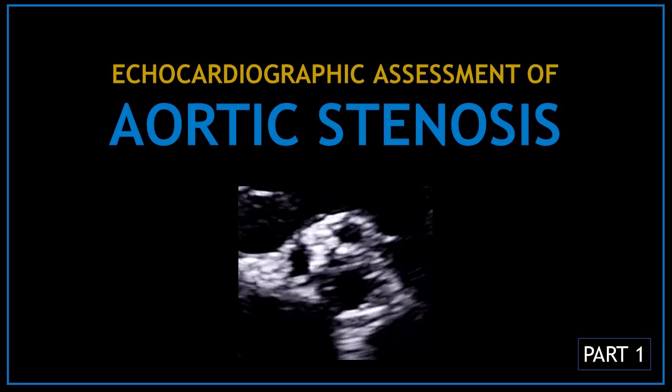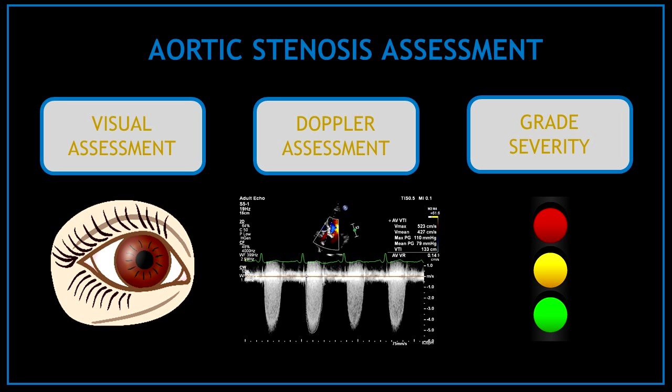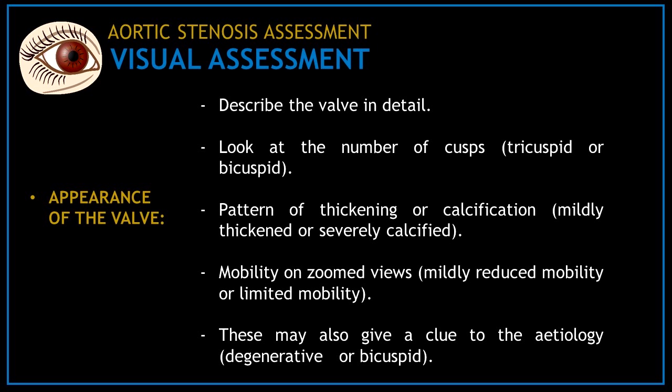Let's start with part one of the echocardiographic assessment of aortic stenosis. You can assess aortic stenosis in different ways; however, I recommend you assess it by following these three steps or categories. The first category is the visual assessment, the second category is the Doppler assessment, and the third category is grading the severity of the aortic stenosis.